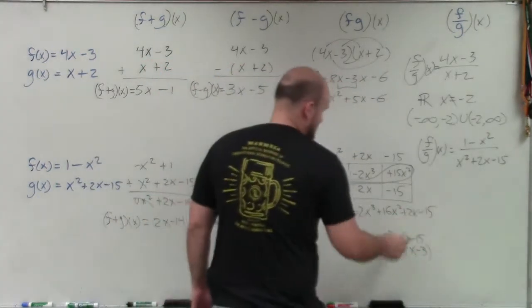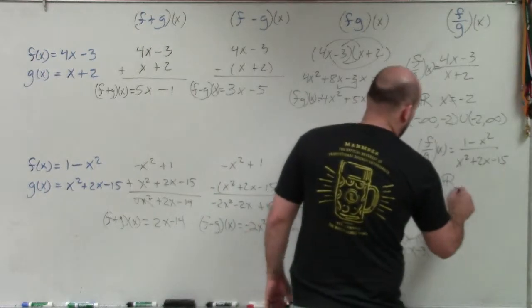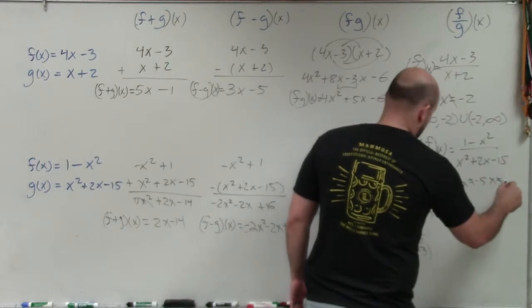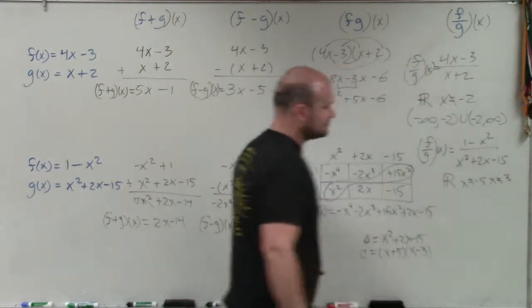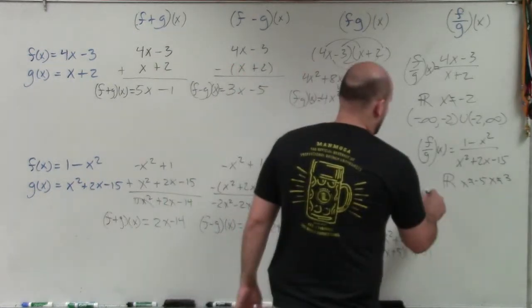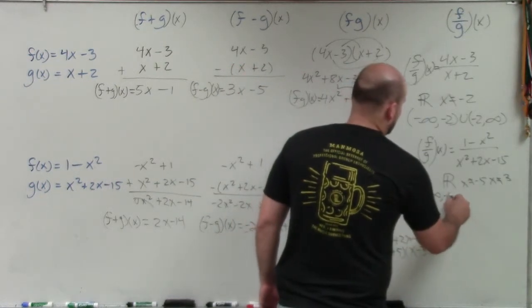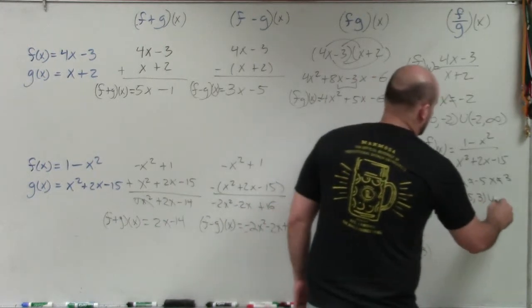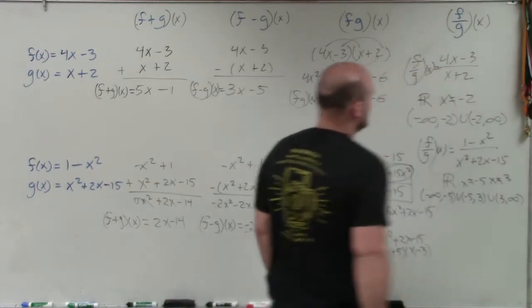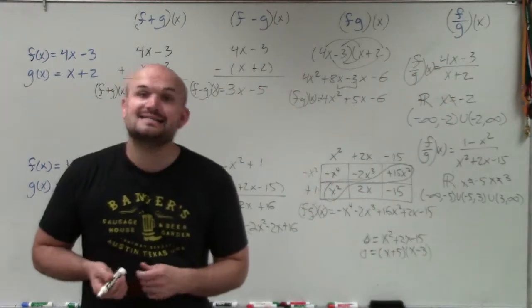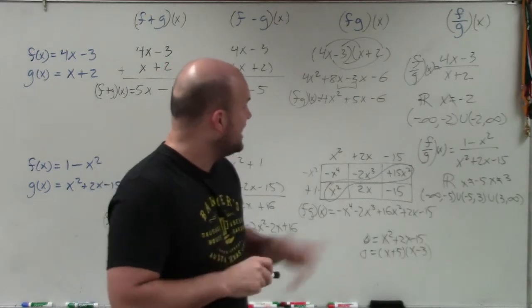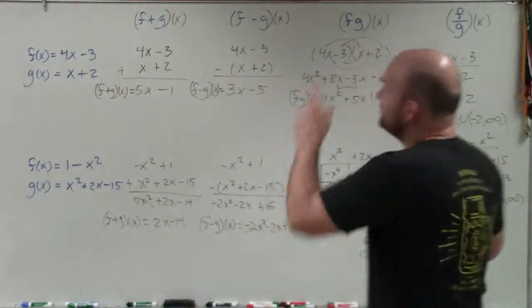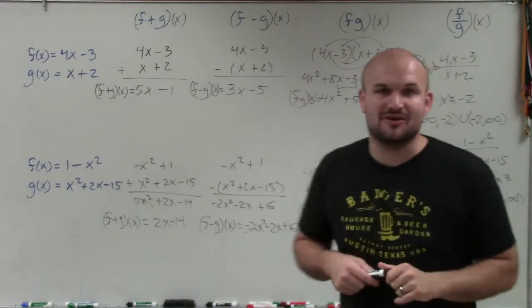So therefore, x, so we could say it's all real numbers. However, if I solve for this, I would know that x cannot equal negative 5, and x could not equal positive 3. Or if I was going to use interval notation, that'd be negative infinity to negative 5, union negative 5 to 3, union 3 to infinity. So there you go, ladies and gentlemen. That is how you determine the domain of a function, as well as write it in interval notation, and add, subtract, multiply, and divide two functions. Thanks.